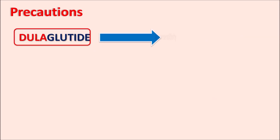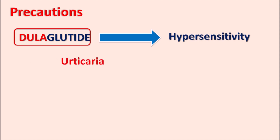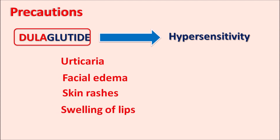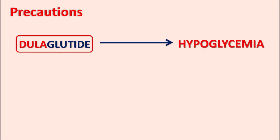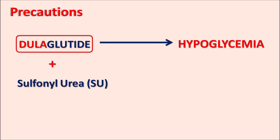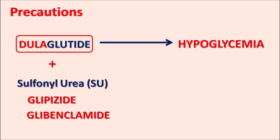Another important precaution is hypersensitivity. This drug can produce urticaria, facial edema, skin rashes, and swelling of the lips. Care should be taken to monitor any hypersensitivity reactions in patients. Like other antidiabetic drugs, Dulaglutide can also produce hypoglycemia. When combined with sulfonylureas — such as glipizide or glibenclamide — which also increase insulin release from beta cells, severe hypoglycemia may result.